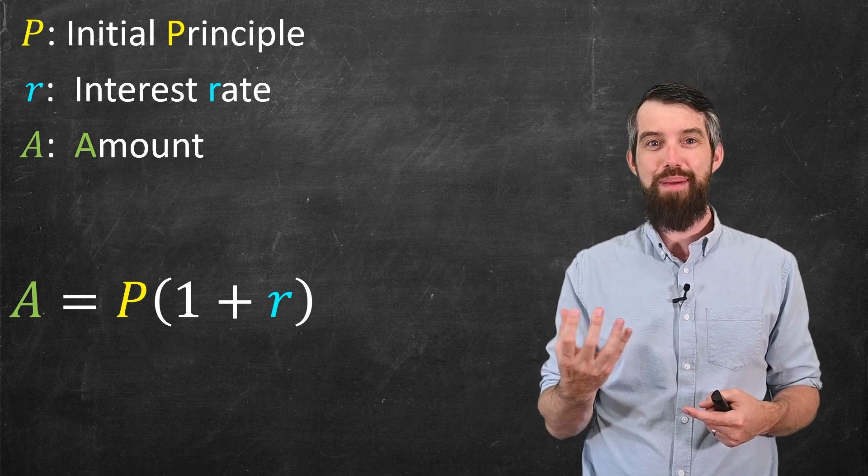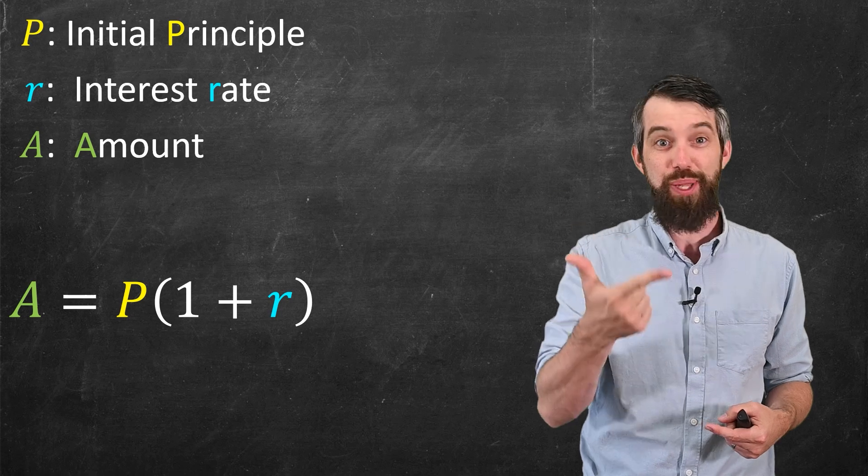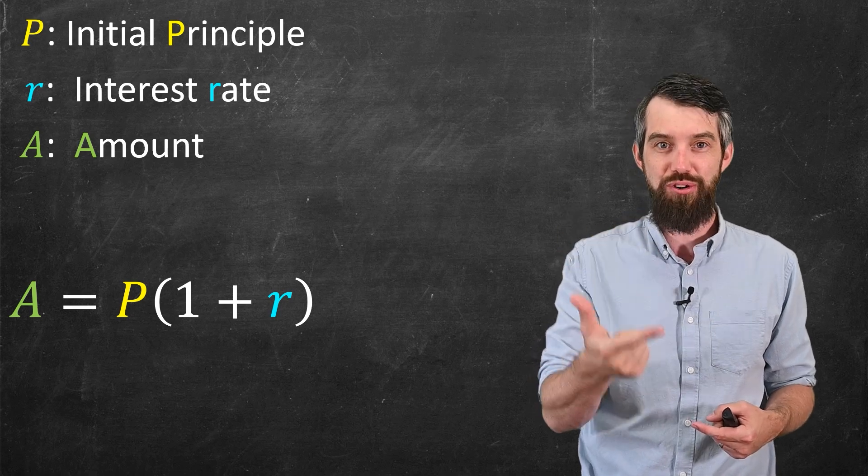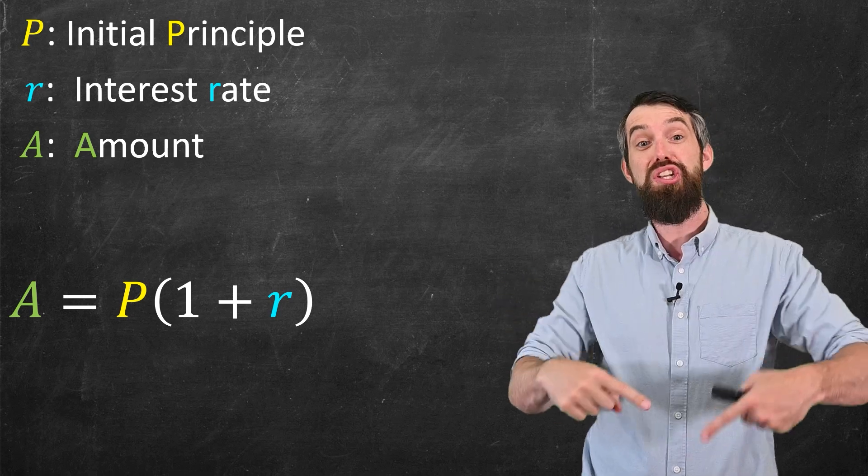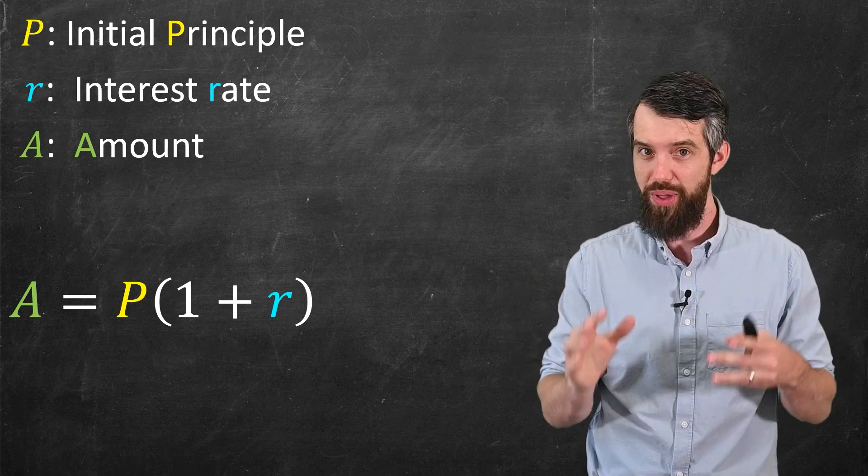It says I need to get back the initial amount, that's the 1, and then also the plus R, that's going to be the interest. So if you just take the P and multiply it by 1 plus R, that's the new amount that's owed.